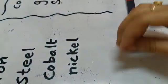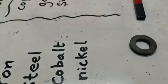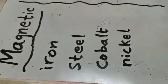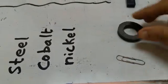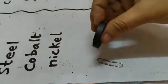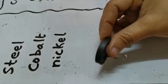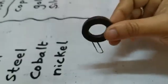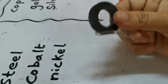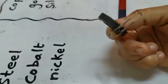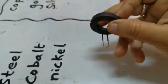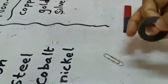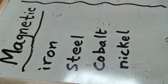Next, I am going to check with steel. I wrote steel here. I am going to take a paper clip and I am trying to pull it towards the ring magnet. It is pulling towards — it is attracting with the magnet. So you can say steel is also a magnetic material, or magnetic metal.